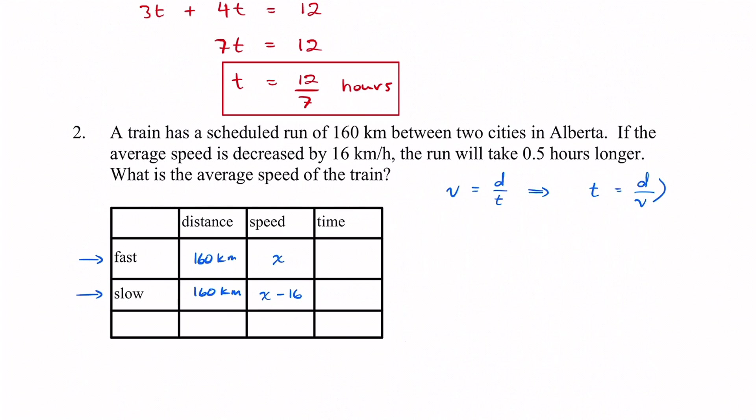To figure out the time, I just got to take distance which was 160, divide by the speed x. And then same thing for the other one. Distance 160, and then divide by its speed which was x minus 16.